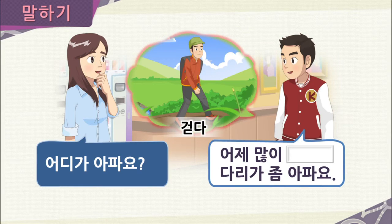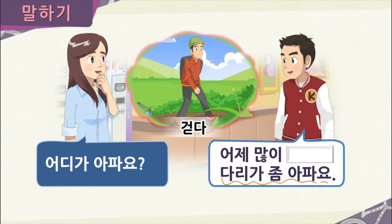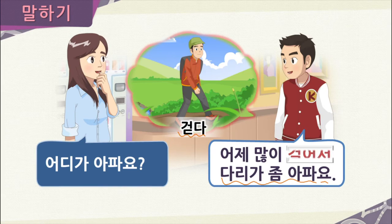This time, 혜진 asks 준수: 어디가 아파요? — are you hurting somewhere? 준수's legs are hurting: 다리가 좀 아파요. But why? Yesterday 준수 walked a lot — 걷다, meaning to walk. So how would 준수 respond? He would say: 어제 많이 걸어서 다리가 좀 아파요 — because I walked a lot yesterday, my legs hurt a little.